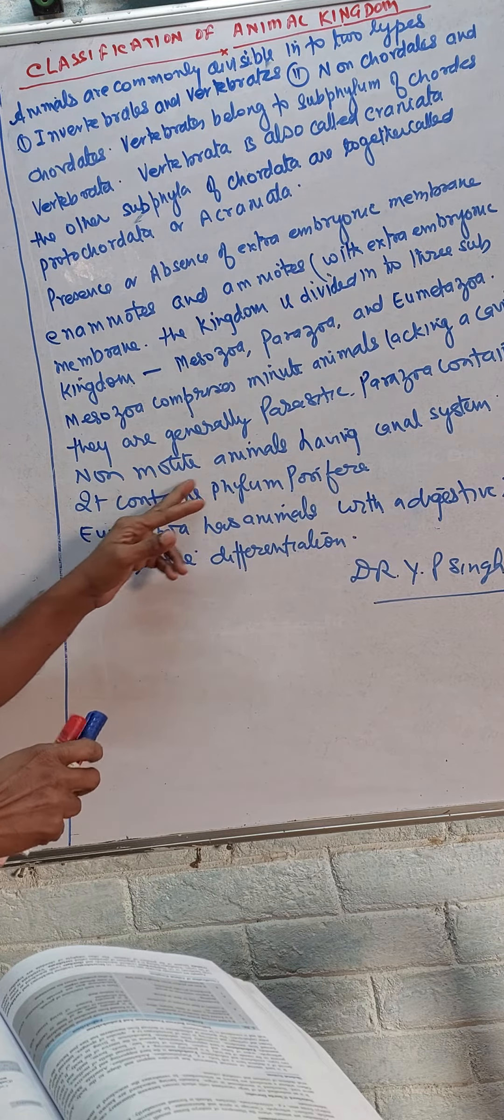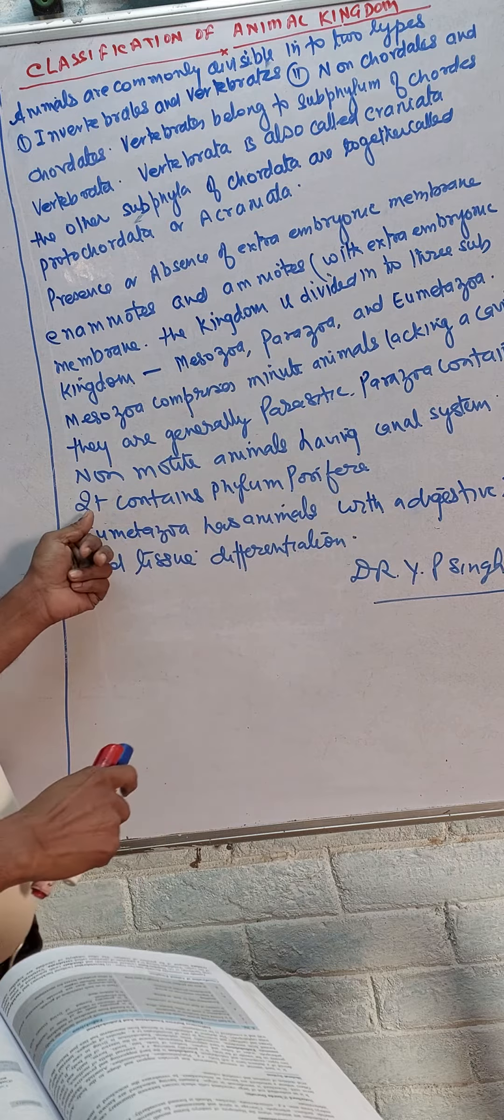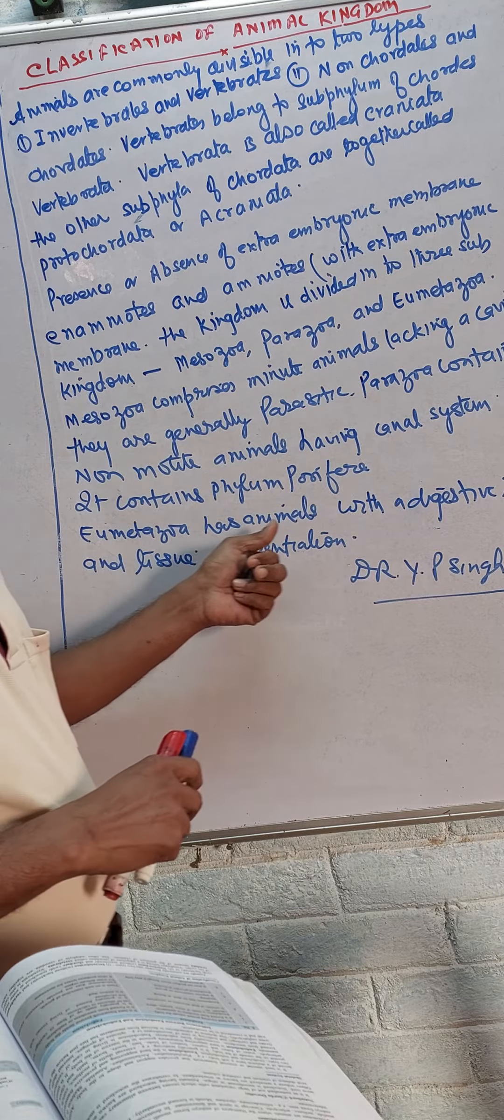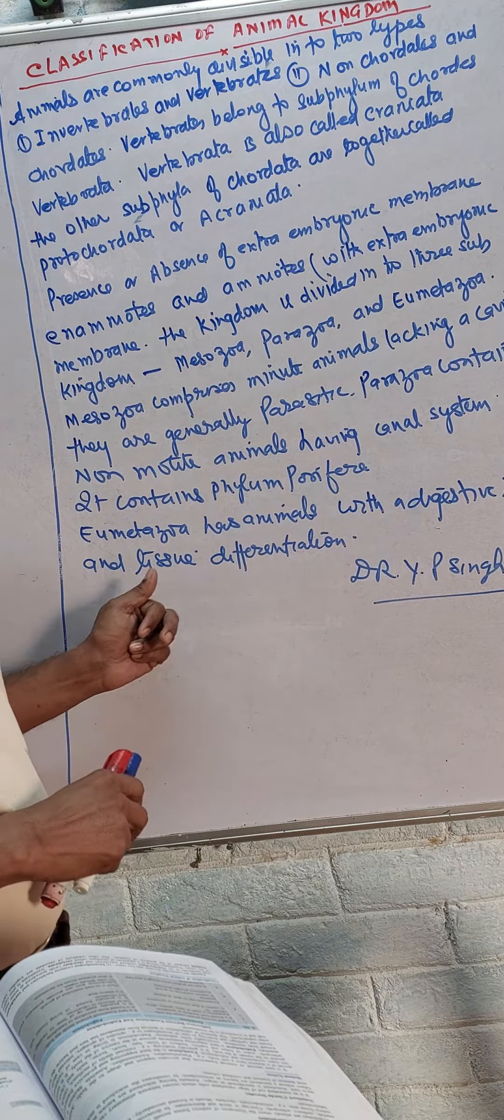Parazoa contains non-motile animals having a canal system. It contains phylum Porifera. Eumetazoa are higher animals with digestive tracts and differentiated tissues.